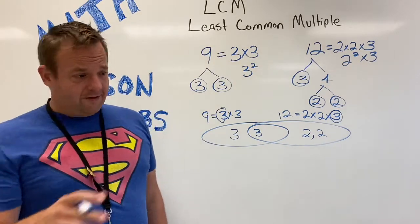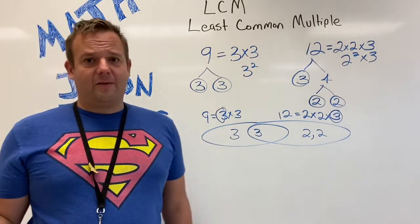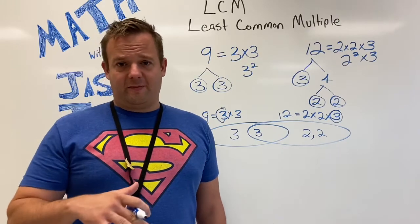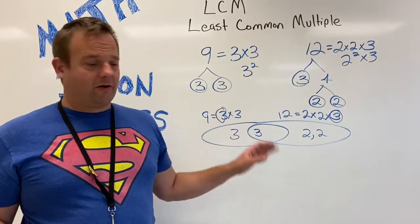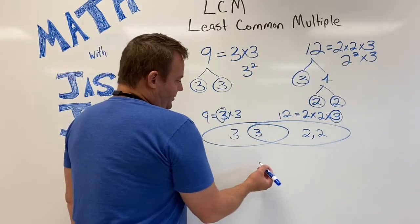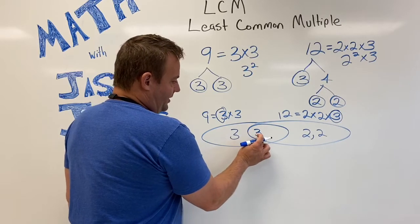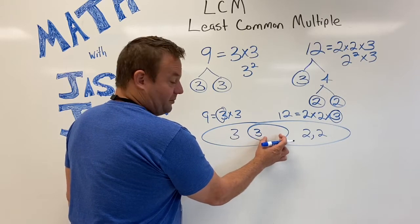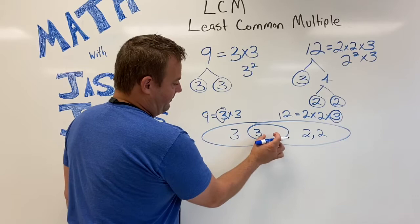So what's cool about the prime factorization method is you can find the greatest common factor and the least common multiple with all the work already done for you. So the greatest common factor is 3. Whatever numbers are in the middle you multiply them together and that's the greatest common factor. In this case it's 3.